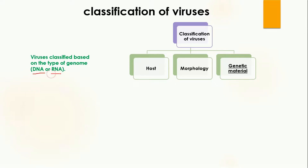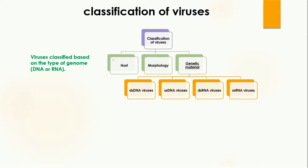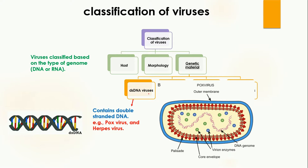The third classification is based on genetic material. Viruses may contain DNA or RNA. On the basis of their genetic material, viruses are divided into: double-stranded DNA viruses, single-stranded DNA viruses, double-stranded RNA viruses, and single-stranded RNA viruses.